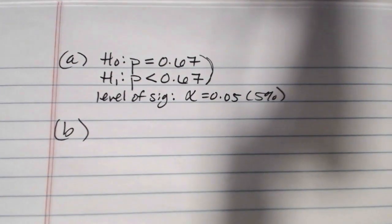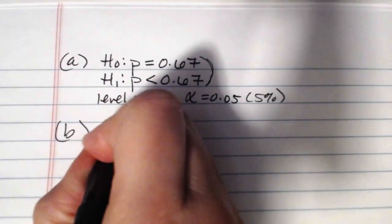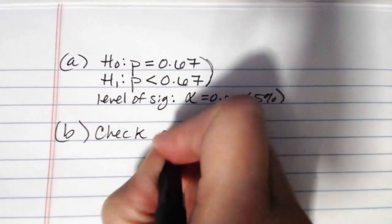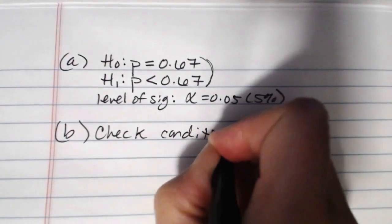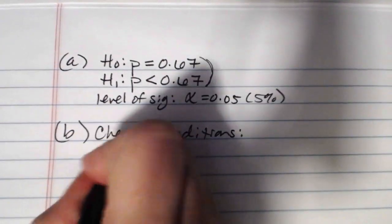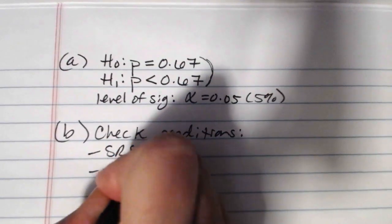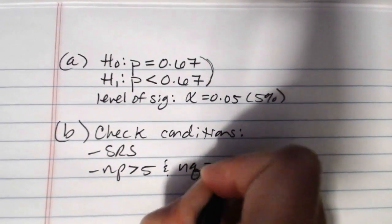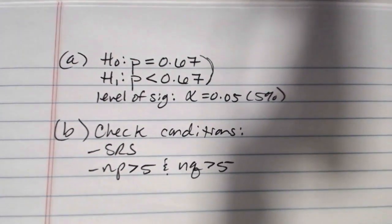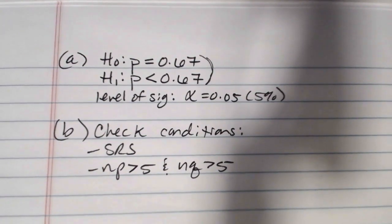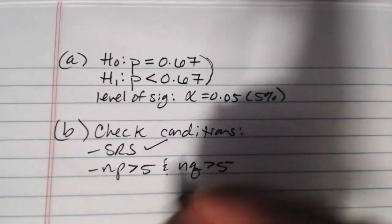In part b, we need to check our requirements or conditions for inference. We need to know that we have a simple random sample, and we need NP and NQ to be greater than 5. It did say that this was based on a random sample of 38 women athletes, so that part is met.